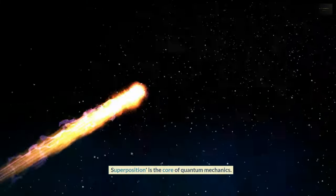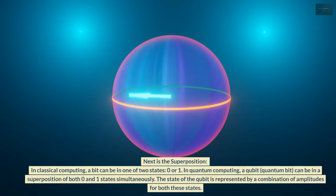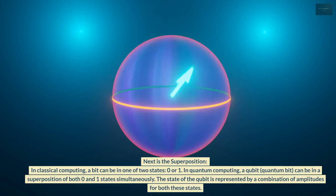Superposition is the core of quantum mechanics. Next is the superposition. In classical computing, a bit can be in one of two states, 0 or 1. In quantum computing, a qubit, quantum bit, can be in a superposition of both 0 and 1 states simultaneously. The state of the qubit is represented by a combination of amplitudes for both these states.